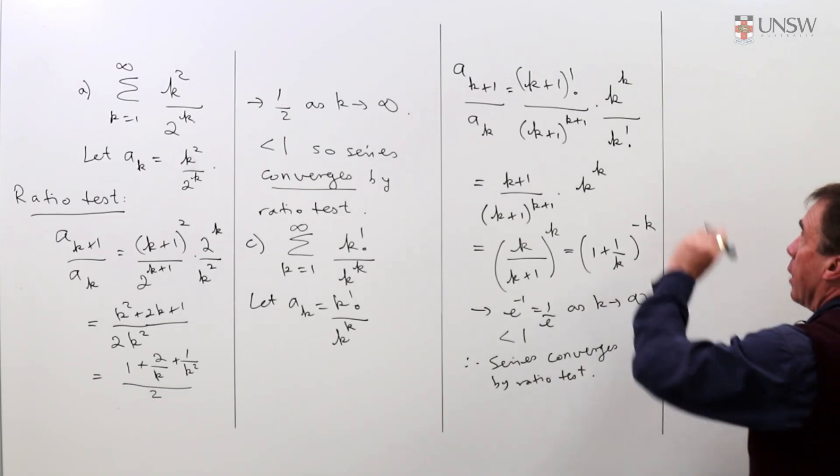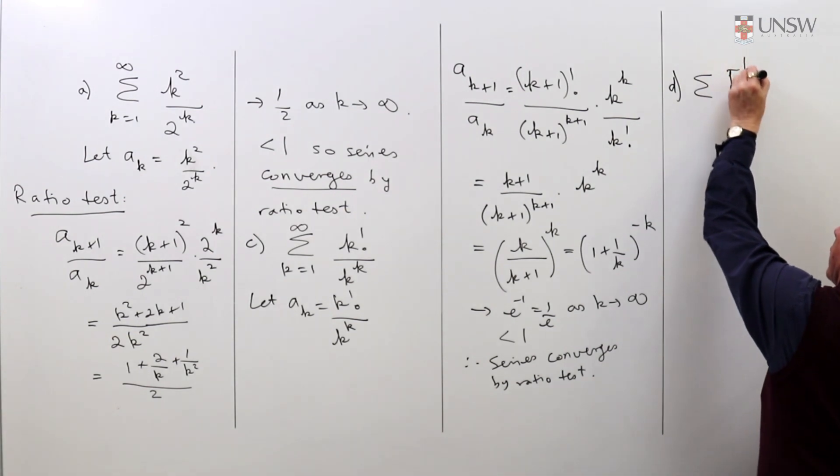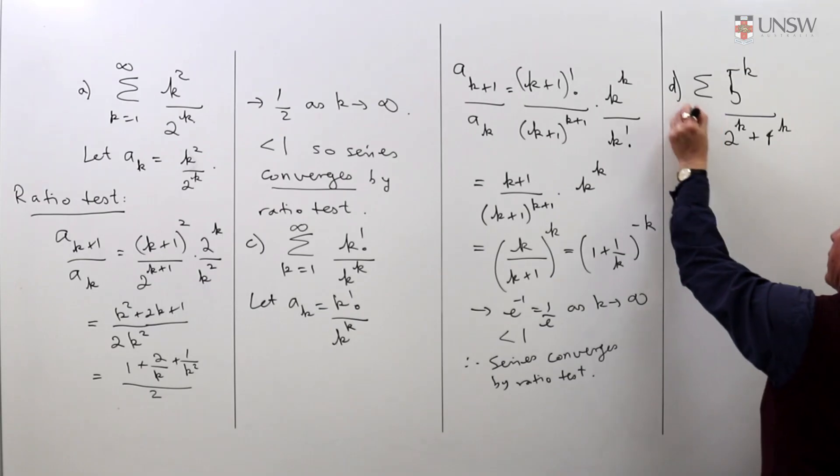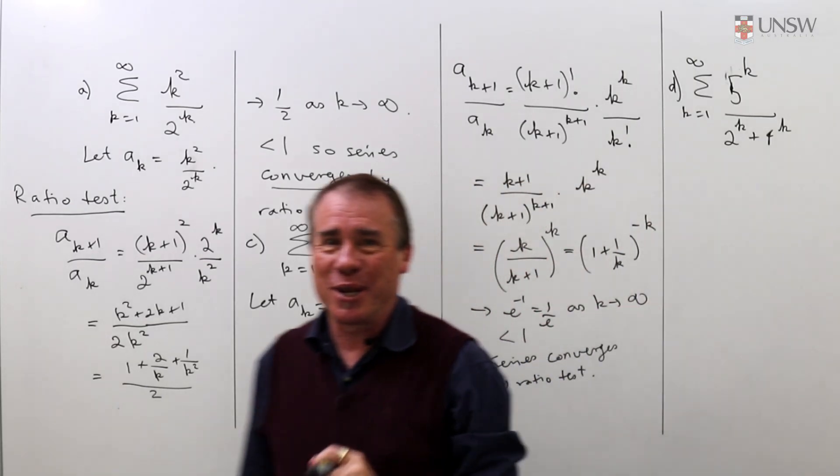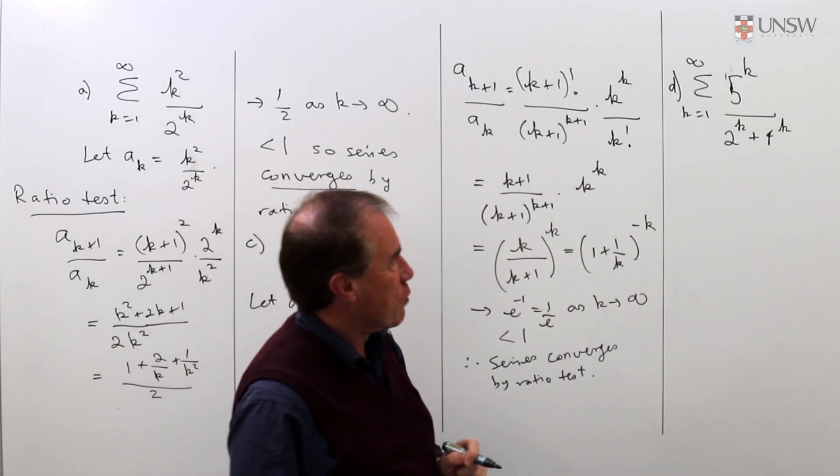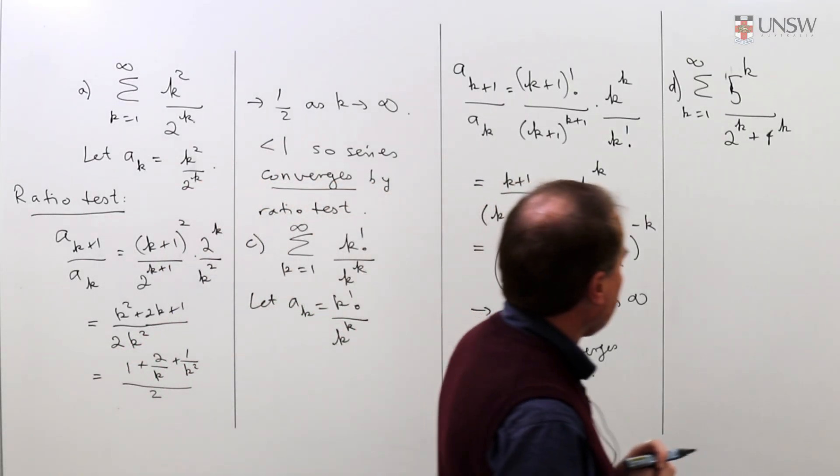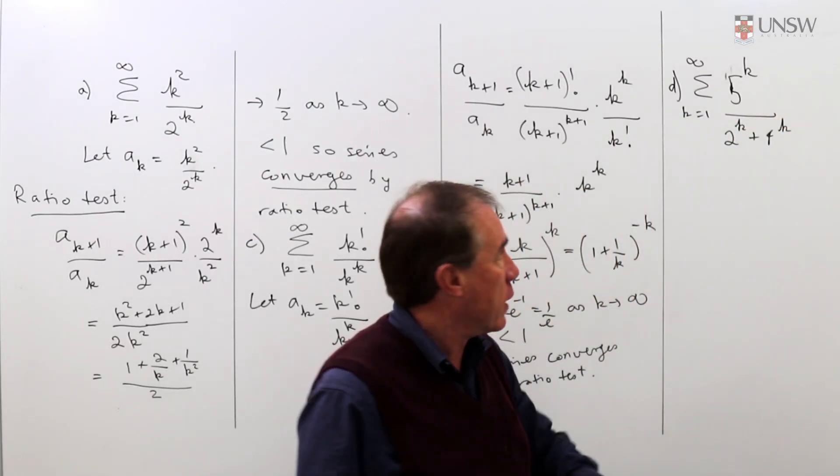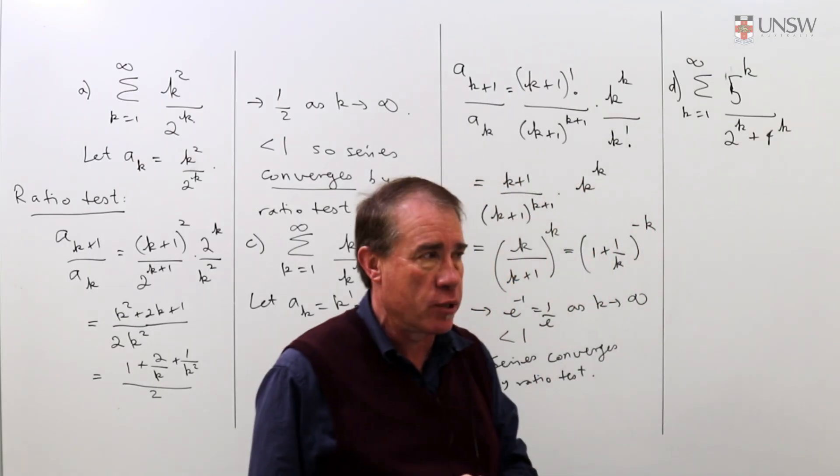Number d is sigma 5 to the k over 2 to the k plus 4 to the k, k goes from 1 to infinity. Always in mathematics you don't just mindlessly apply algorithms, you think about what this series is doing. You've got 5 to the k on the top which is going to be getting much bigger much more quickly than the 4 to the k or the 2 to the k.